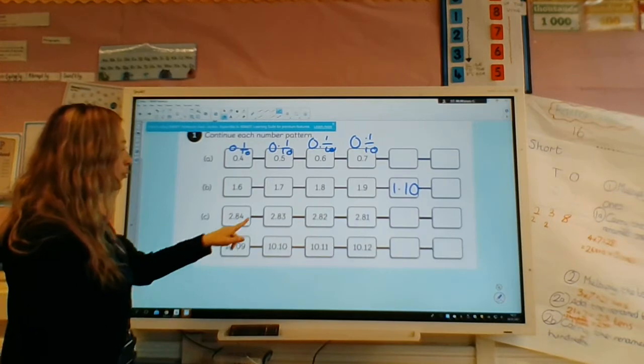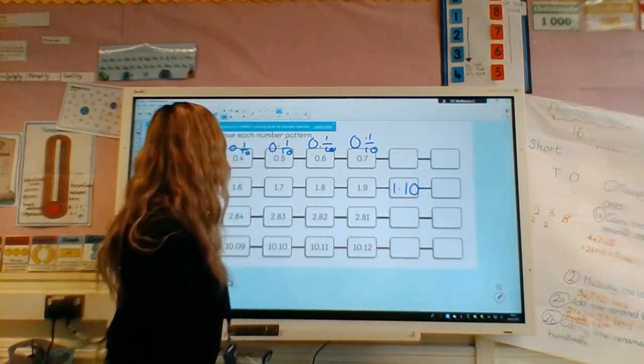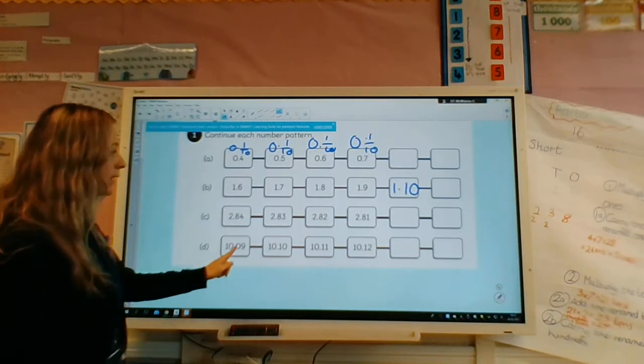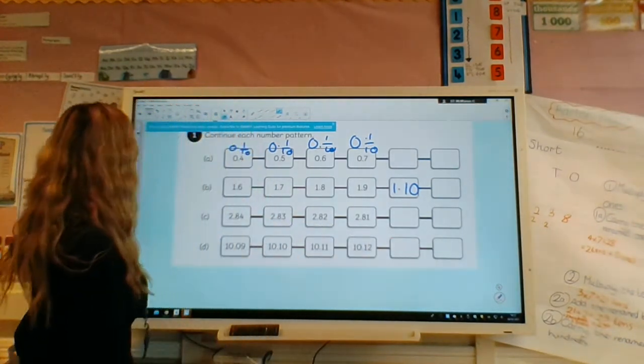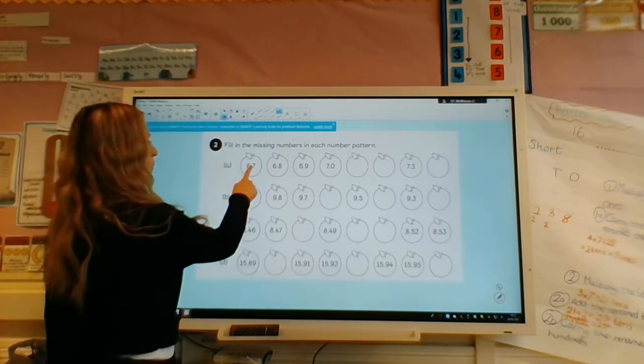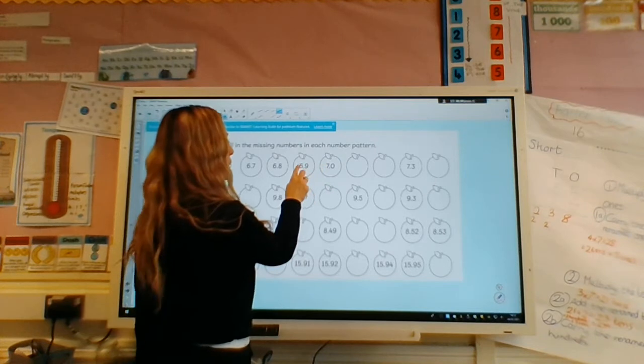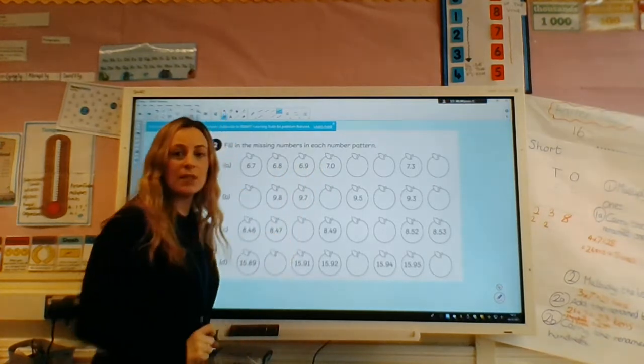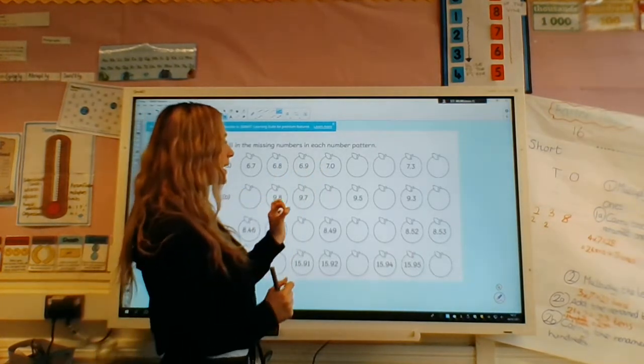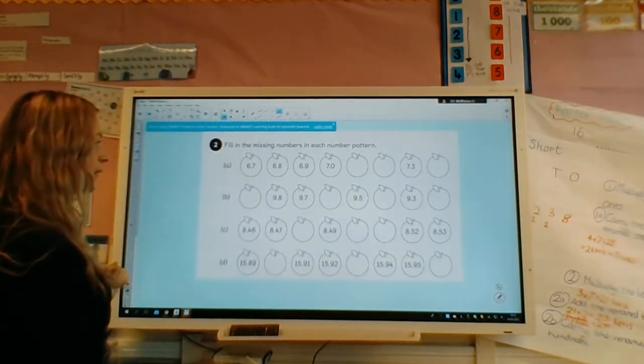We've got 2.84, 2.83, 2.82, 2.81, and continuing further. Carrying on the number pattern, 6.7, 6.8, 6.9, 7.0, because I can't put 6.10, so that 10 tenths converts to one whole, so that becomes 7.